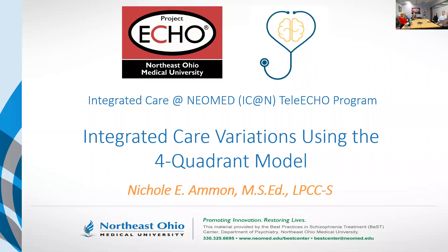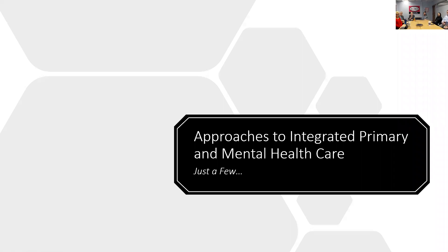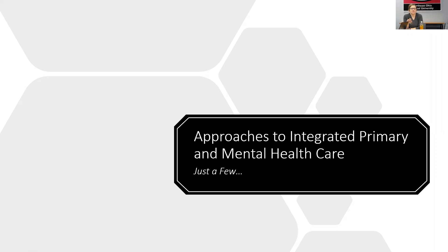Before jumping into the four quadrant model, I just want to very quickly look at a couple of the other variations. All of these approaches are really more about organizational and structural integration — it's less about teamwork and communication, and more for people at the upper levels of organizations to figure out how they can do this at that level. This is an important distinction because clinical integration and team-based care often looks very different than some of the structural models we use.